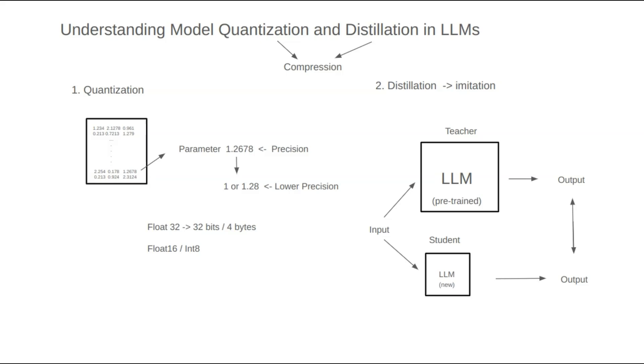For example, if GPT-4 is the most advanced model on the market, we can use GPT-4's inputs and responses to train our own model. This allows our model to mimic GPT-4's behavior closely. Many open-source models on the market are trained using distillation techniques.